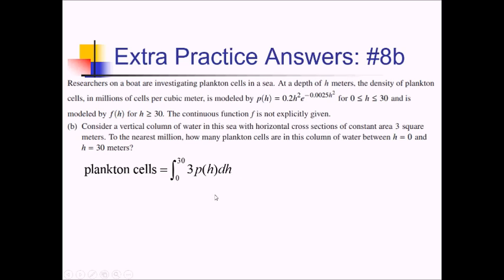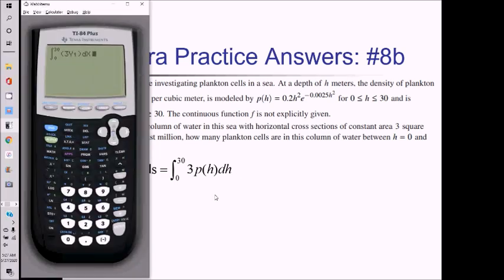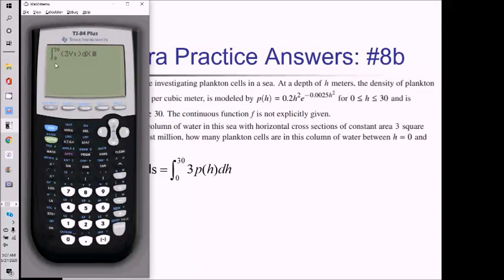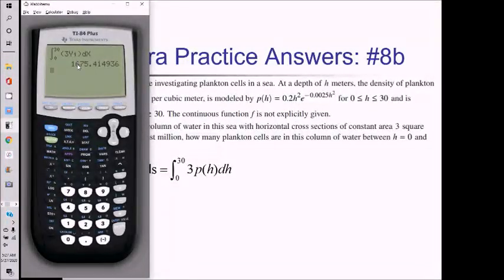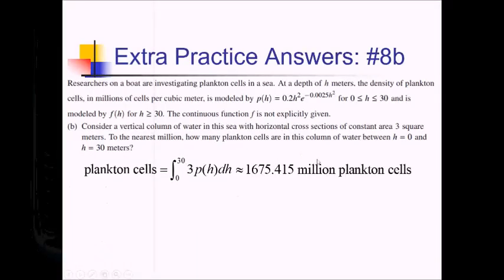So it's time to just integrate this on the calculator. I have p of h stored as y1, so I do math 9, integral 0 to 30, 3 times alpha trace y1, with dx. Pressing enter, this comes out to 1,675.415 million plankton cells.